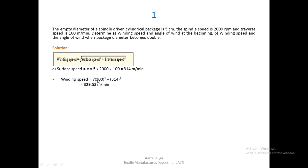Calculating the winding speed: it is the square root of 100 squared (the traverse speed) plus 314 squared, and the answer is 329.53 meters per minute.